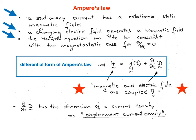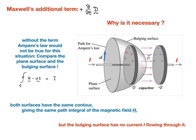What motivated Maxwell to add an additional term to the experimental Ampere's law without any experimental evidence at the time? Maxwell noted an inconsistency of the experimental laws as they were known, best understood by looking at Ampere's law in its integral form. The closed path integral of the magnetic field strength H equals the current that penetrates through the surface limited by the contour of the path. Without the inclusion of the term d/dt of D, the situation illustrated would be inconsistent.